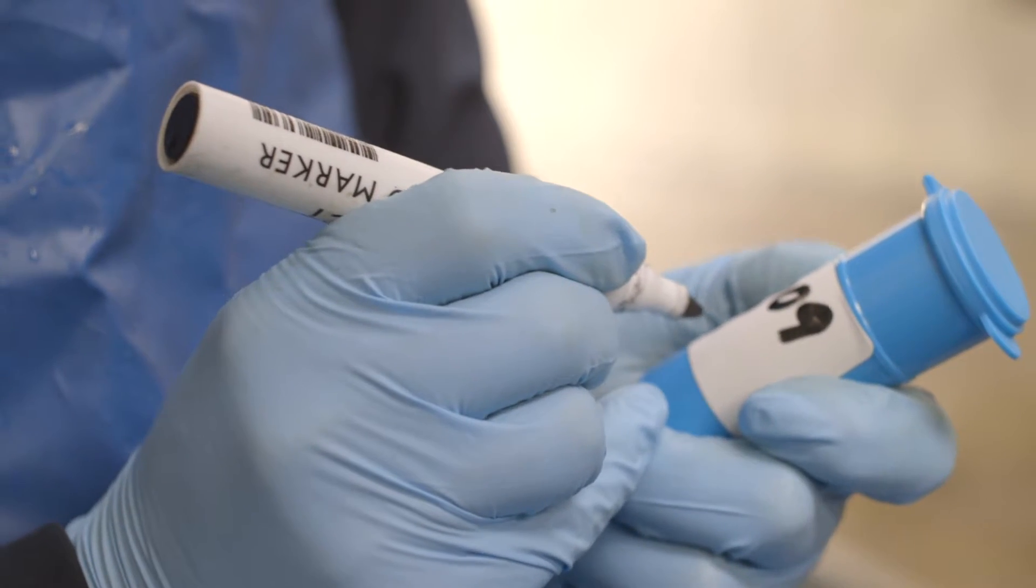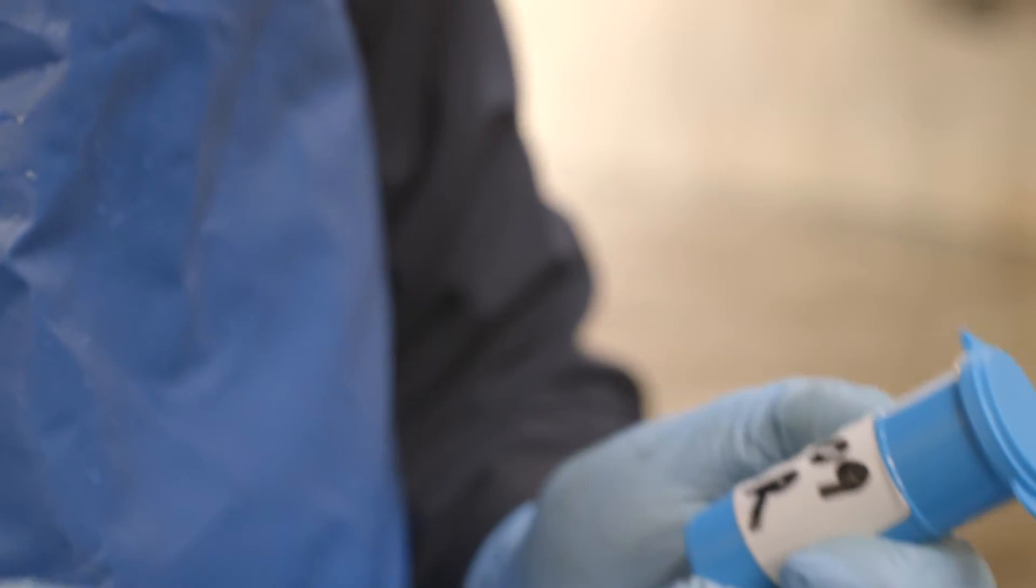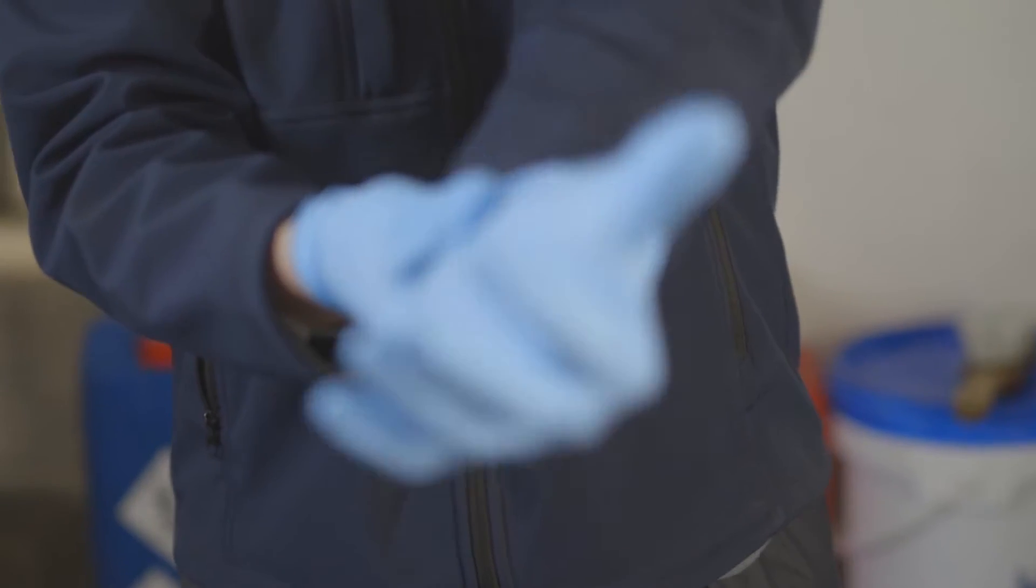Firstly, label the bottle with cow number, quarter, and the date of sampling. Then put on new clean gloves.